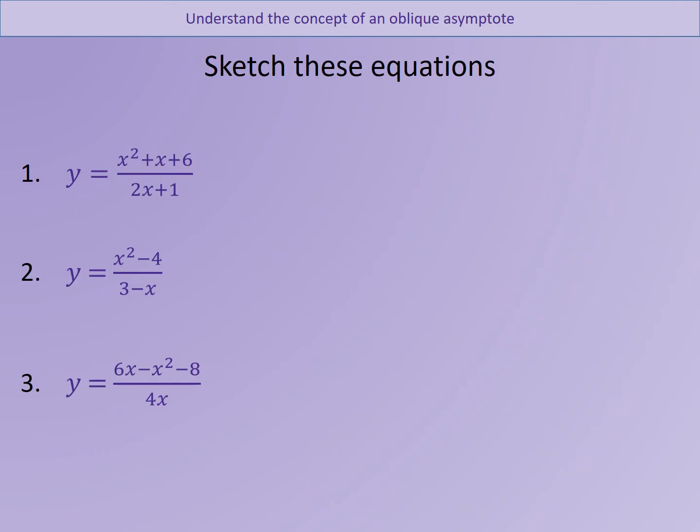What I'd like you to do please is have a go at sketching those equations. Go through the process — go through the algorithm in your heads: find the intercepts, find the asymptotes, find maximum and minimum values if required (it doesn't in this case), then find the oblique asymptote and then sketch the graph. Pause there, have a go at all three of them and I'll show you the answers.